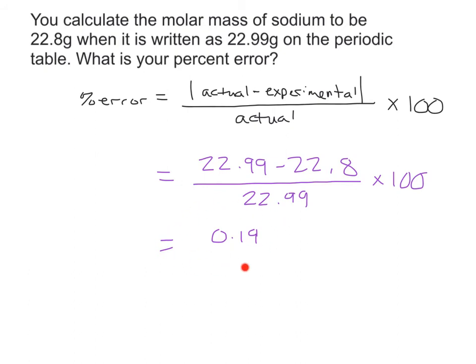If we compare that to the total actual grams of what we should have gotten, that gives us a ratio of how off we were. You multiply that by 100, and that's your percent, your percent error. So we have 0.19 divided by 22.99, then we're going to multiply by 100.